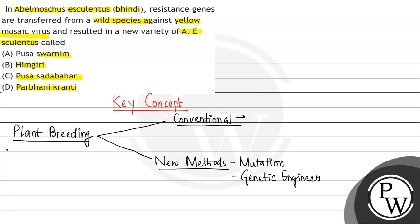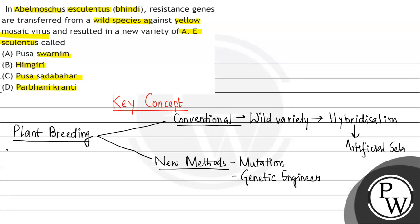In conventional breeding, first a wild variety of the same plant is selected — one that has the disease-resistant gene. Then hybridization is carried out. After hybridization, artificial selection is done on the new plants, followed by inbreeding over several generations, after which the disease-resistant character becomes fixed.